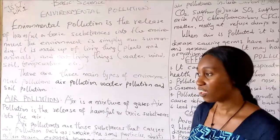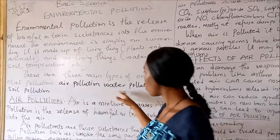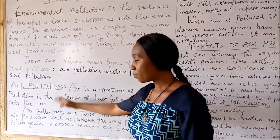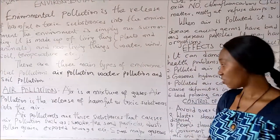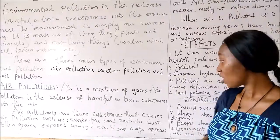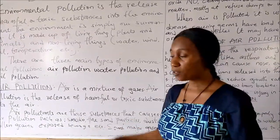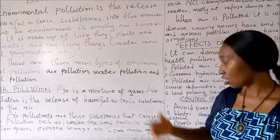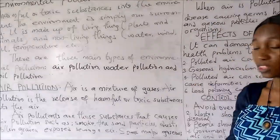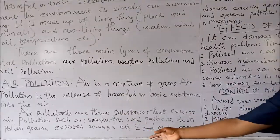There are three main types of environmental pollution: air pollution, water pollution, and soil pollution. Air is actually a mixture of gases, and air pollution is the release of harmful or toxic substances into the atmosphere. These air pollutants could include smoke, fine chemicals, dusts, pollen grains, and exposed sewage.